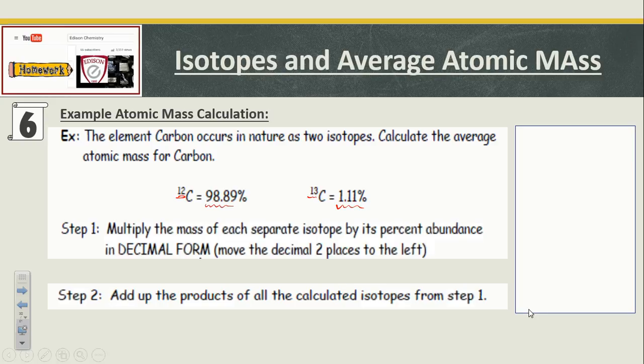Let me set this up and multiply across and then add together. For carbon-12, I'm going to take the percent abundance in decimal form. A percentage in decimal form, I take that decimal and move it two places to the left. So, 0.9889 times the atomic mass of that particular isotope times 12.